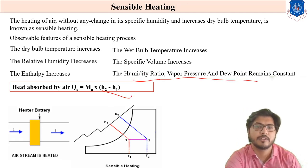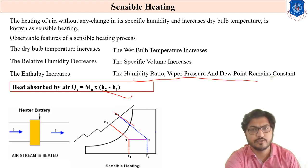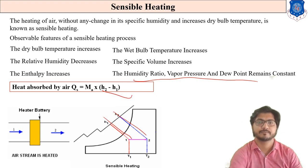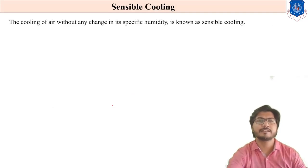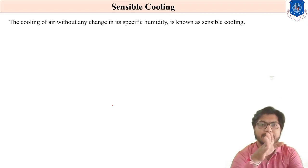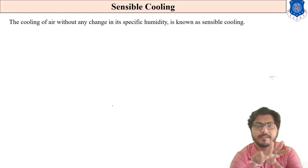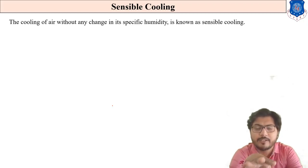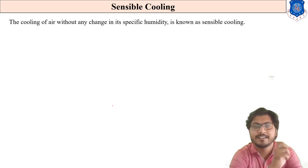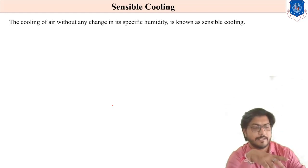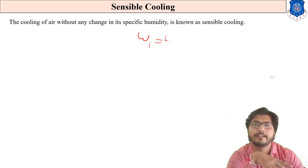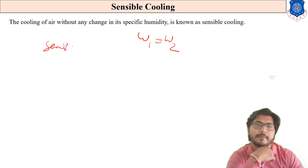Remember this formula: heat absorbed by air, Qs equals m(H2 minus H1). Next is sensible cooling. Sensible cooling is cooling of air — that means dry bulb temperature decreases without changing its specific humidity. This sensible cooling process is similar to sensible heating but just opposite. In sensible cooling, temperature decreases but W1 equals W2.